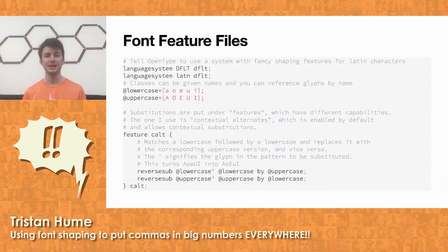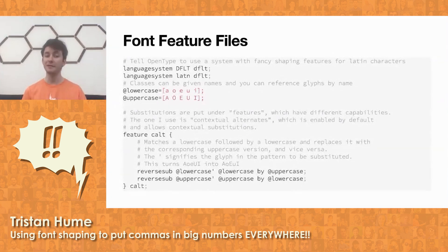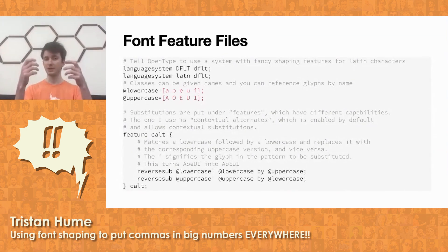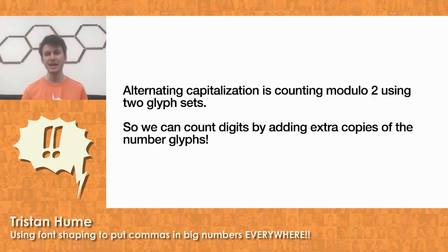Font designers don't actually use the tables directly because they're a binary format. They use a language called font feature files, which compiles down to the tables. Here I have an example file. It has glyph class definitions at the top for lowercase and uppercase vowels, and it specifies a feature for the rules. My first rule finds a lowercase character next to another lowercase character and turns it into an uppercase character. The next rule takes an uppercase character next to another uppercase character and turns it into a lowercase character. Because these are reverse chaining, they start from the end of the string and make it so no two cases are next to each other — they alternate, starting from whatever was at the end.